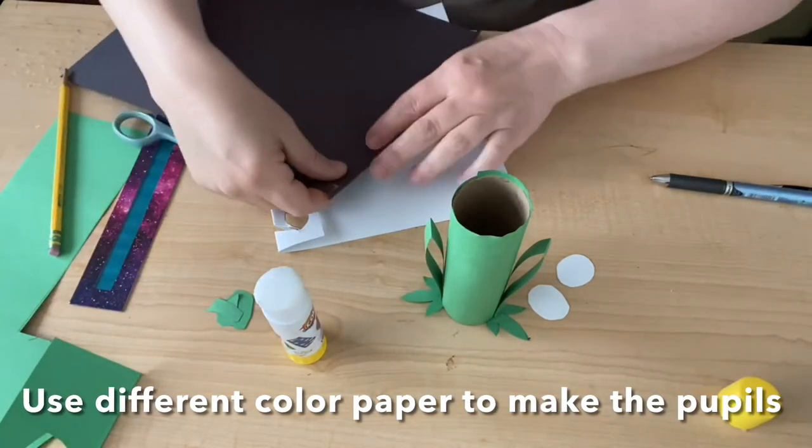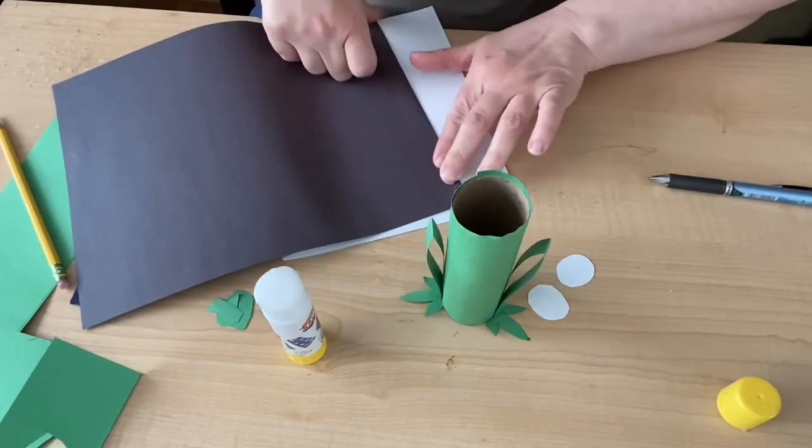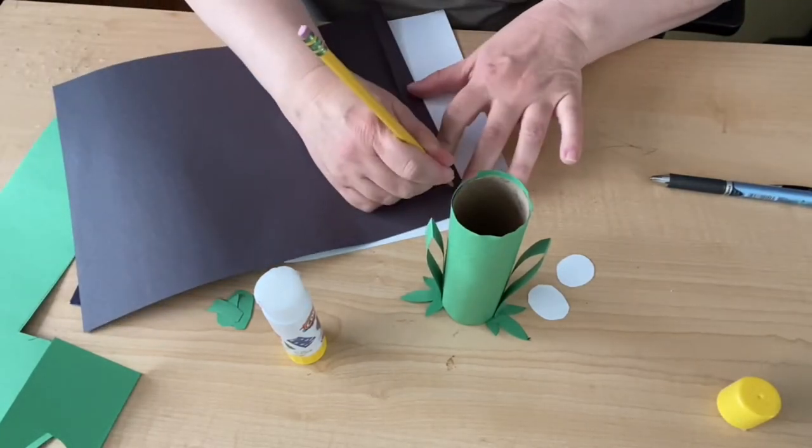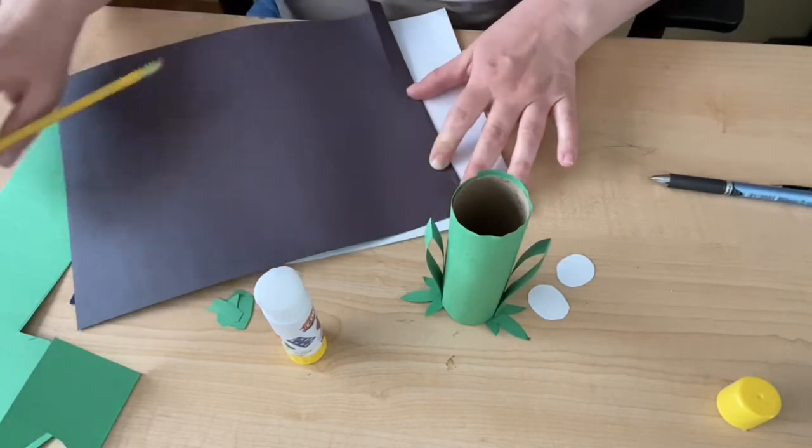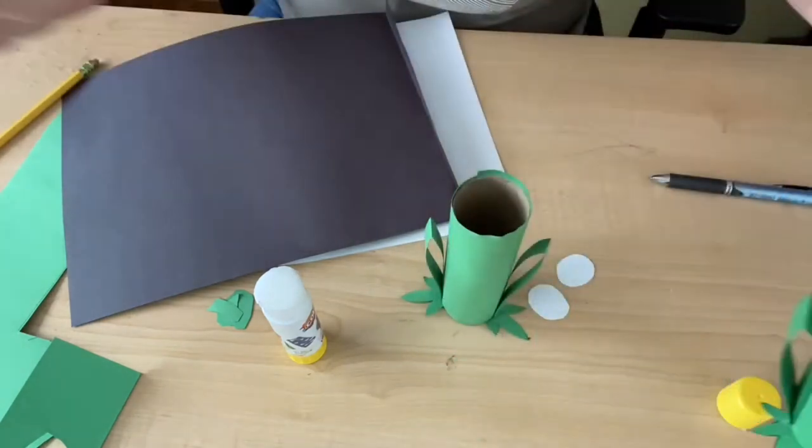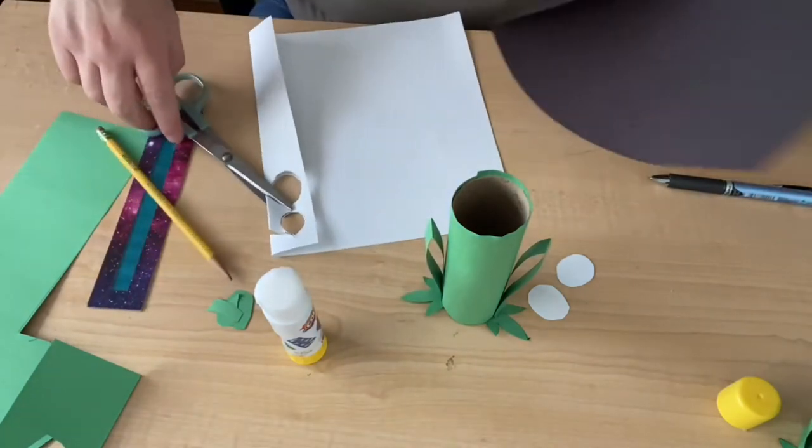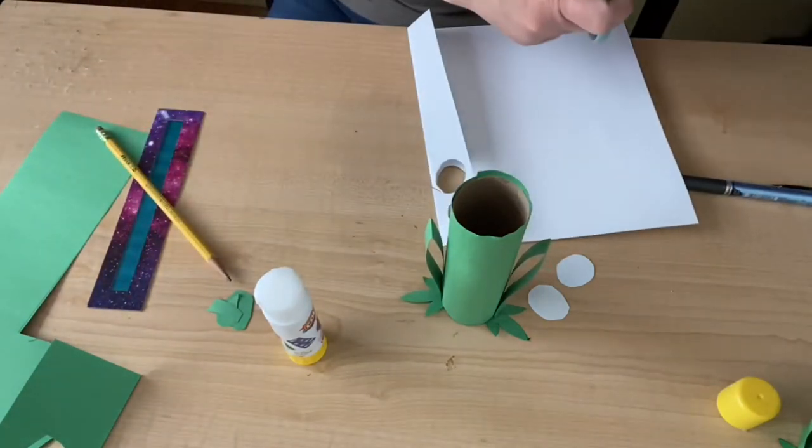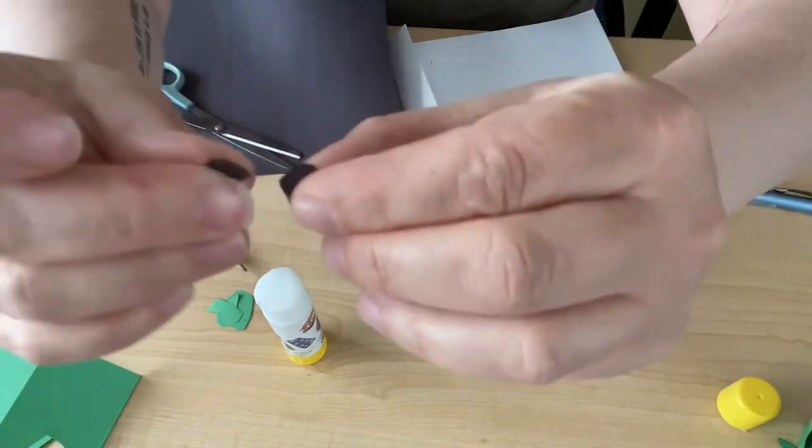We're going to do the same with the black for the pupils. I'm going to draw one black circle here, smaller than the white circles because that's going to be the pupil on the frog. The black part is the pupil. We're going to cut out the black part and then we will be able to glue on our eyes.